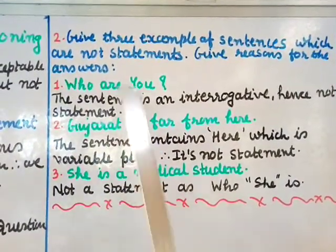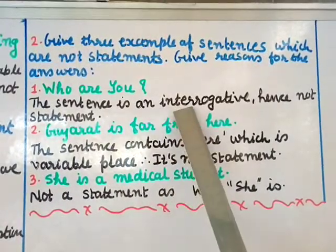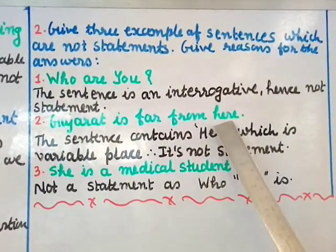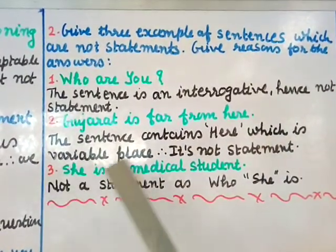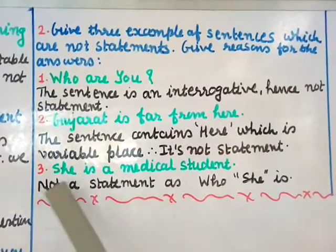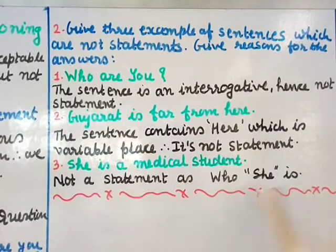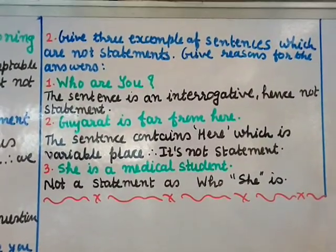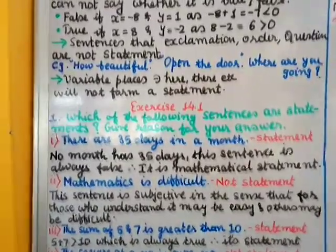First example: 'Who are you?' — this is a question, an interrogative sentence, therefore it is not a statement. Second example: 'Gujarat is far from here' — the word 'here' is a variable place, therefore this is also not a statement. Third example: 'She is a medical student' — 'she' does not refer to any particular person, so the sentence is not a statement. With this we end Exercise 14.1. Thank you very much.